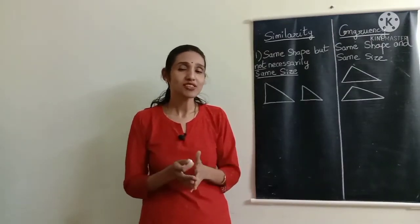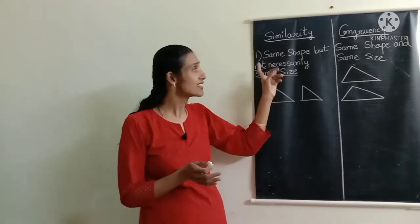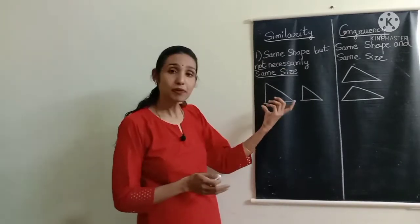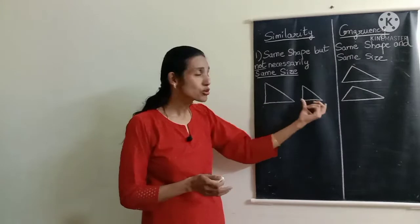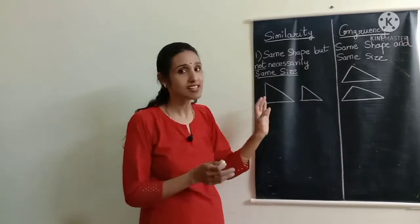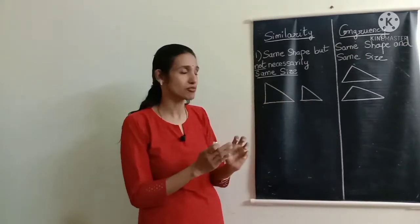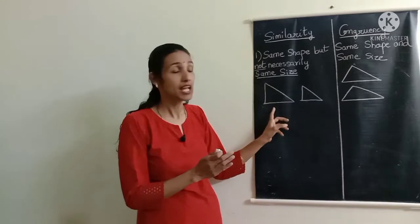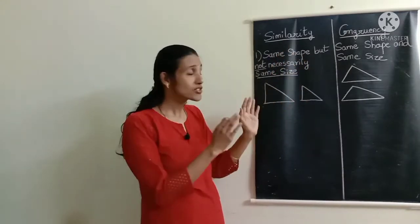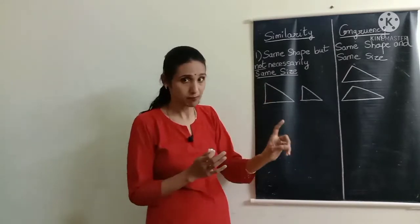When are two figures said to be similar? They are said to be similar if they have the same shape but not necessarily the same size. For example, here I have two triangles and it is very clear that these two triangles have the same shape, but their sizes are different — this one is smaller than this one. So these two triangles are said to be similar.